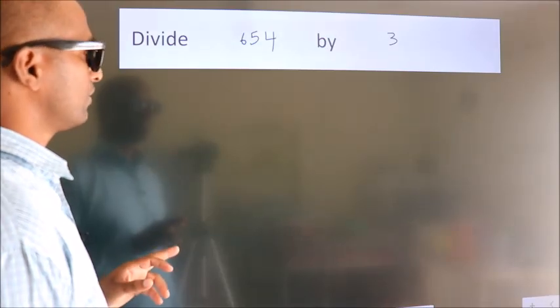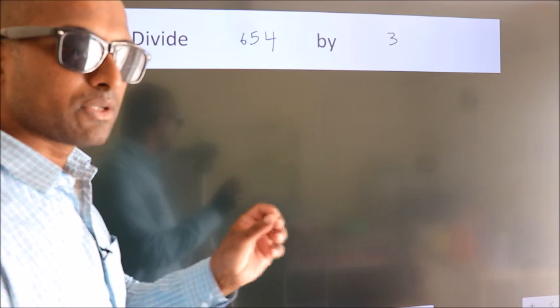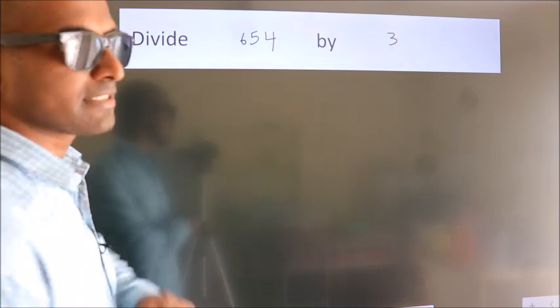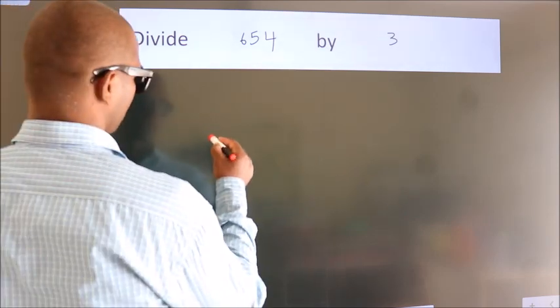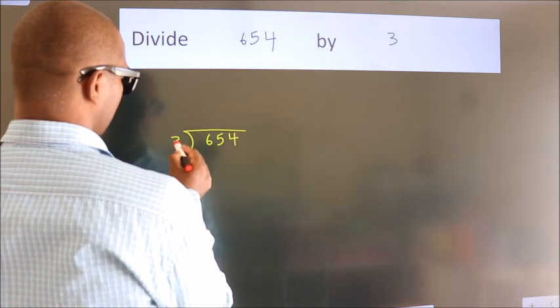Divide 654 by 3. To do this division, we should frame it in this way: 654 here, 3 here.